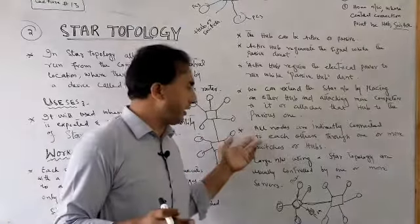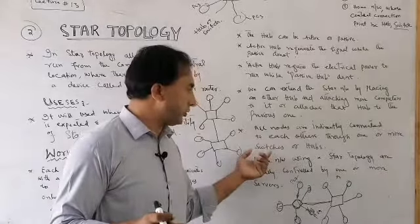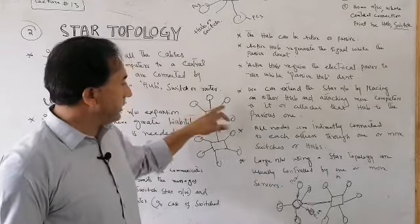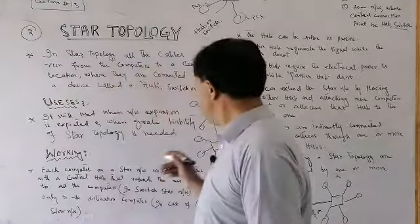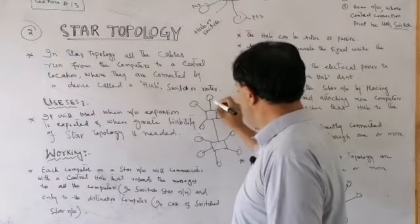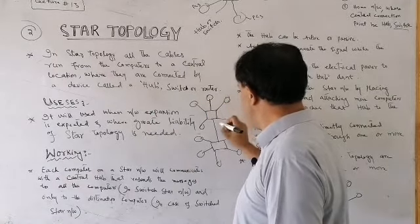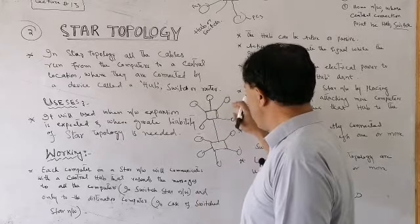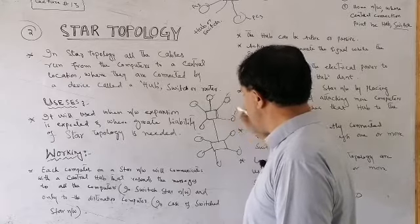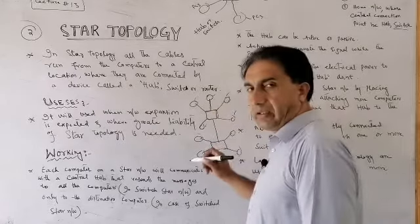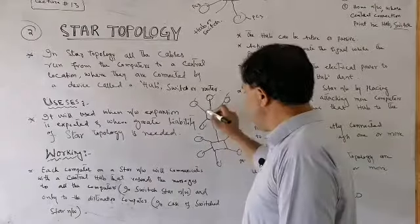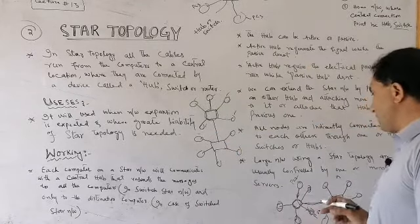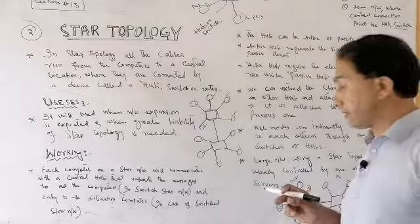All nodes are indirectly connected to each other through one or more switches or hubs. All nodes are connected through the central device — the switch, hub, or router — which serves as the central connection point.